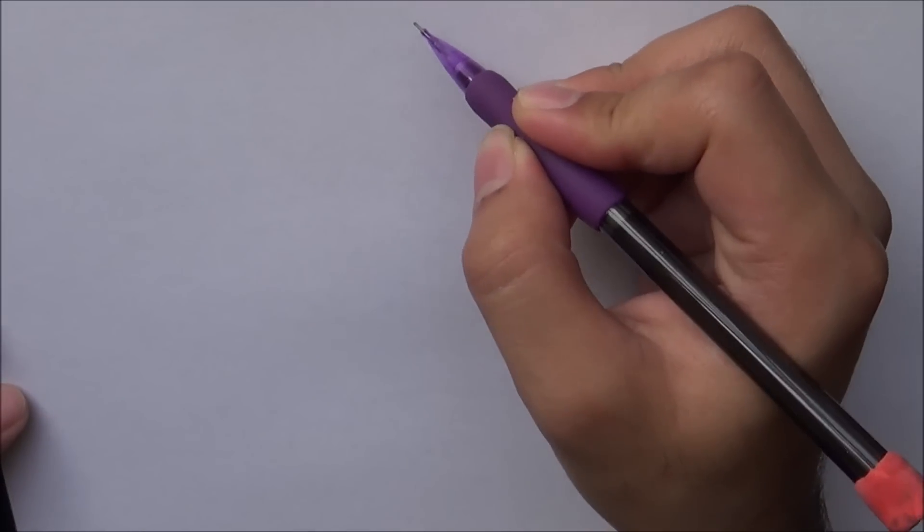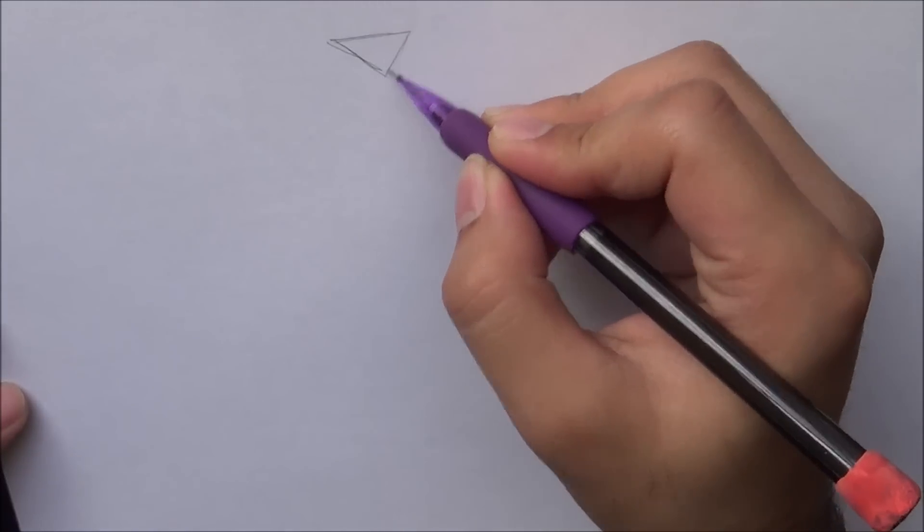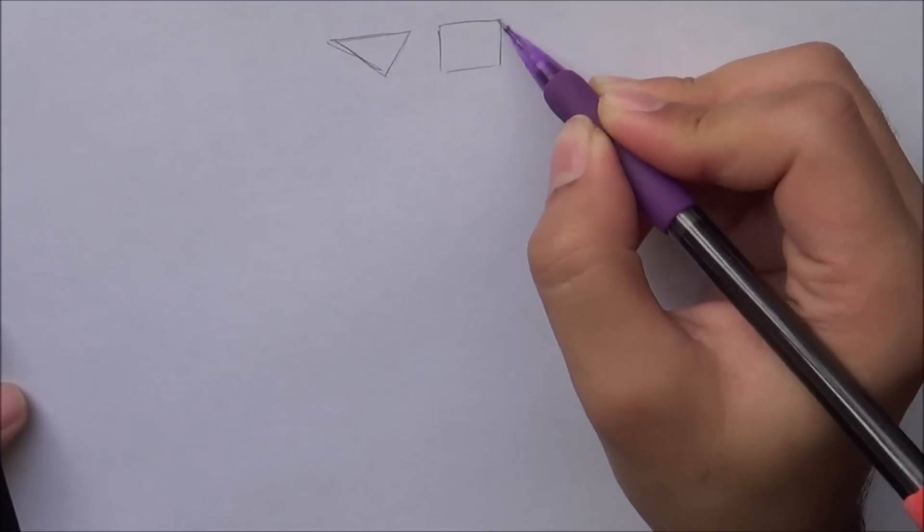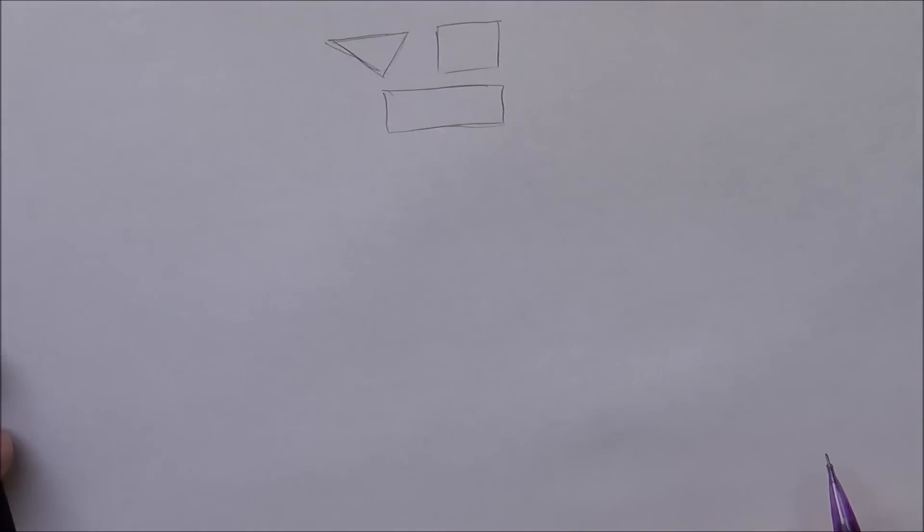Welcome guys to another how to draw video by Regina King Ninja King. Today I'm going to show you how to draw manga mouths. The shapes you need to learn when drawing a mouth are an upside down triangle, a square, and a rectangle. These aren't perfect shapes, could have done them in time lapse but I chose not to.